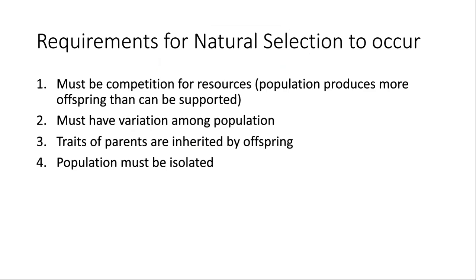For natural selection to occur, there are a couple of requirements. First, there must be competition for resources — the population produces more offspring than can be supported by the environment. If there's no competition or no predator to select, there's no reason for one trait to be more advantageous than another and no struggle between different traits, so natural selection just won't occur.